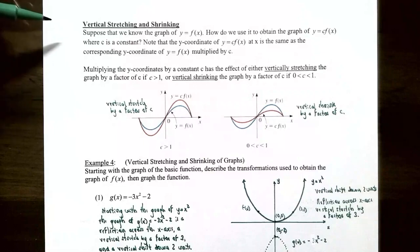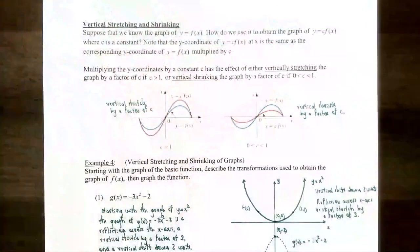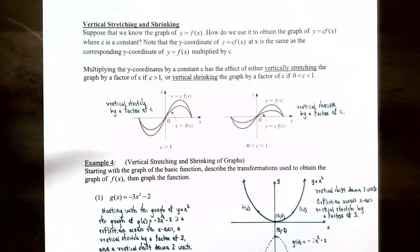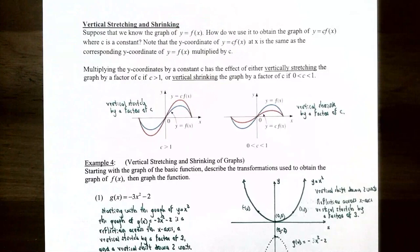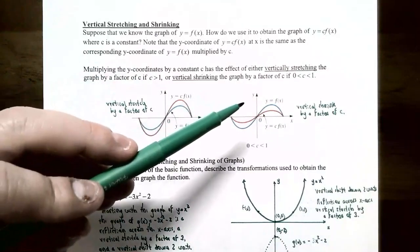So let's pick up where we left off. This is vertical stretching and shrinking. Suppose that you know what the graph of y equals f(x) looks like. How do you obtain the graph of y equals c times f(x) where c is a constant? Each of the y-coordinates of y = c·f(x) at the same x value will have the y-coordinate of y = f(x) multiplied by the value of c. If c is greater than 1, it's a vertical stretch by a factor of c. If c is between 0 and 1, it's a vertical shrink by a factor of c.